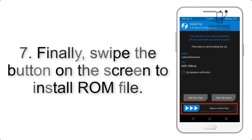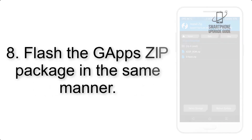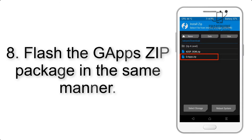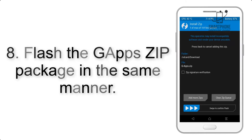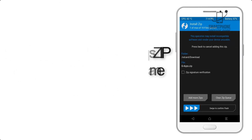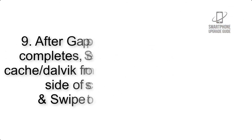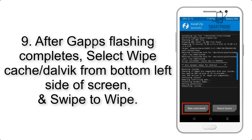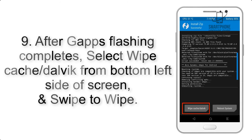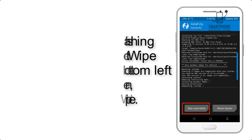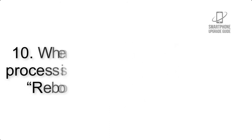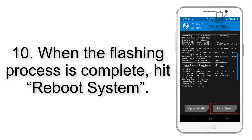Step 7: swipe the button on the screen to install the ROM file. Step 8: flash the GApps zip package in the same manner. Step 9: after GApps flashing completes, select Wipe Cache and Dalvik from the bottom left side of the screen and swipe to wipe.